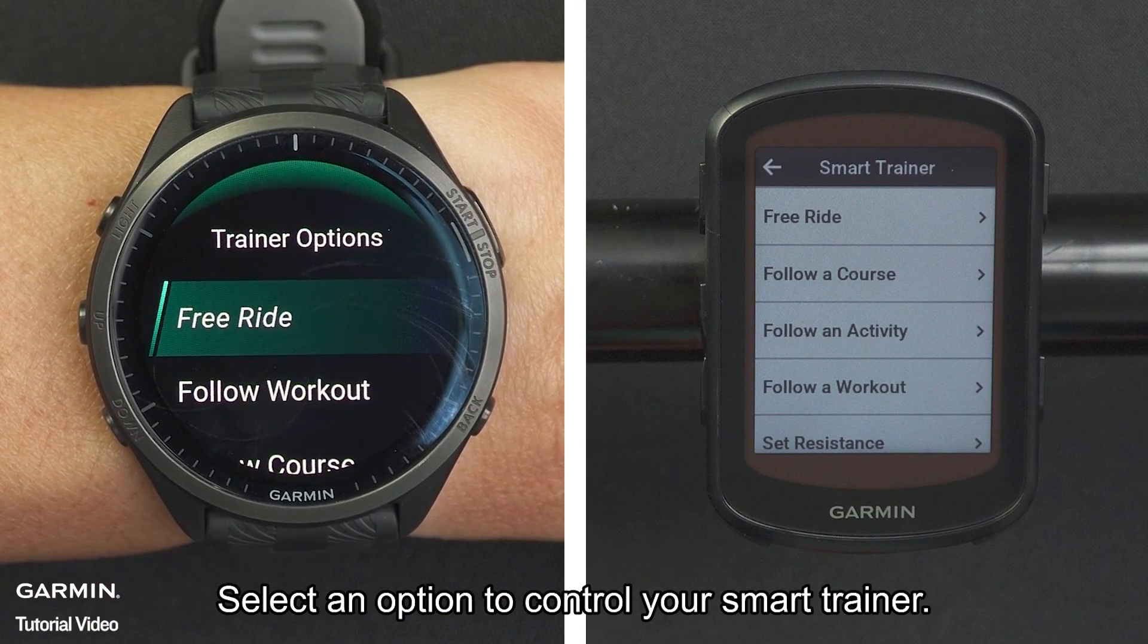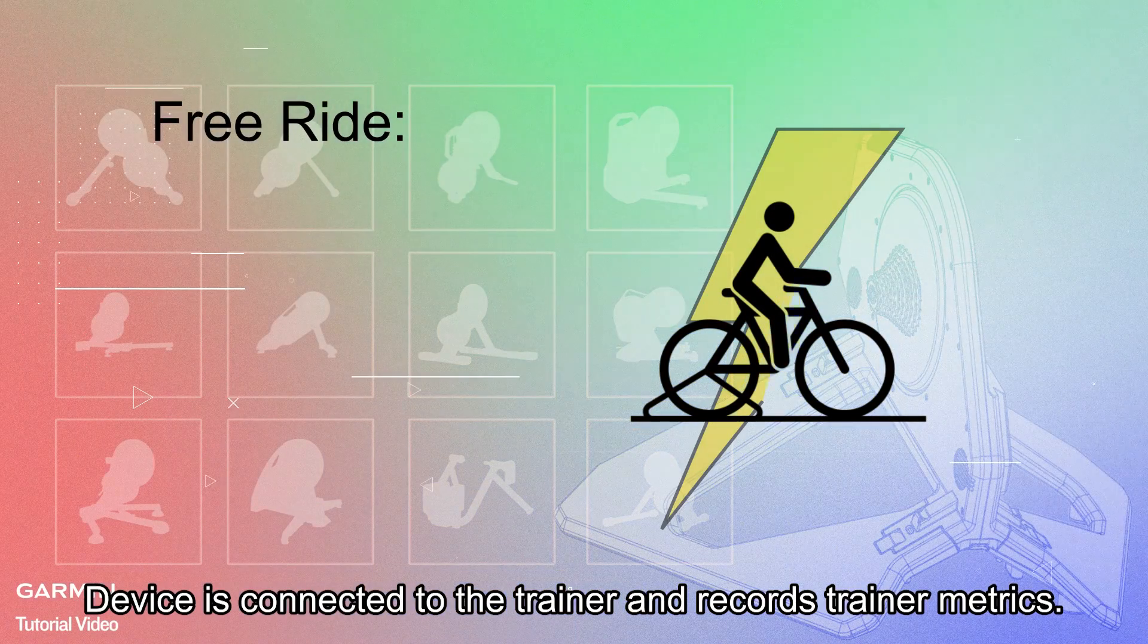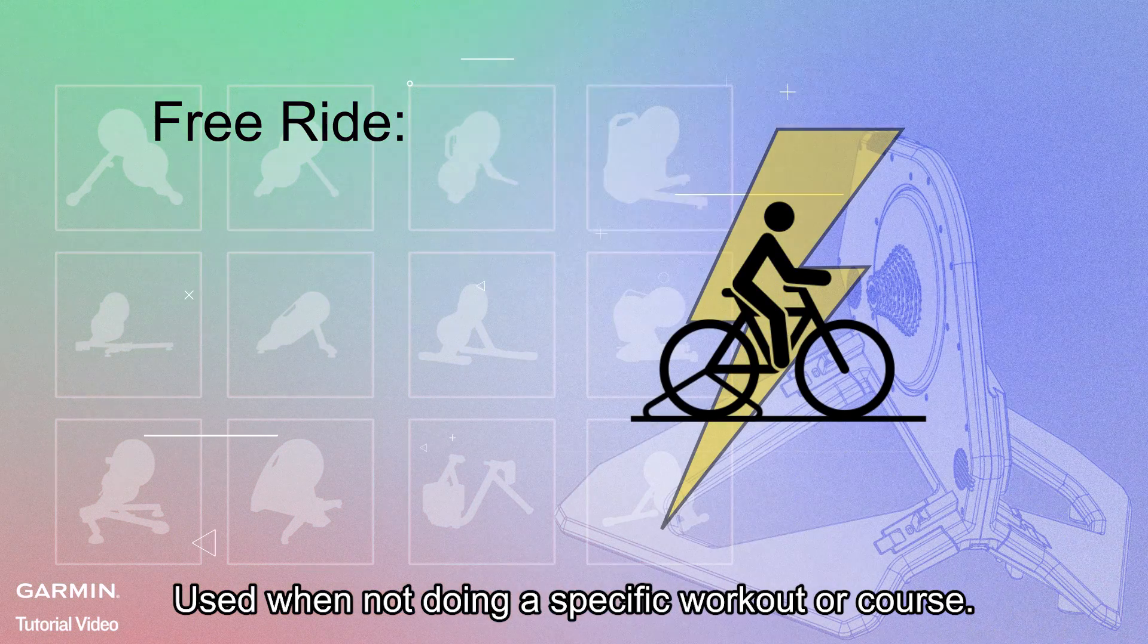Select an option to control your smart trainer. Free Ride: Device is connected to the trainer and records trainer metrics. Used when not doing a specific workout or course.